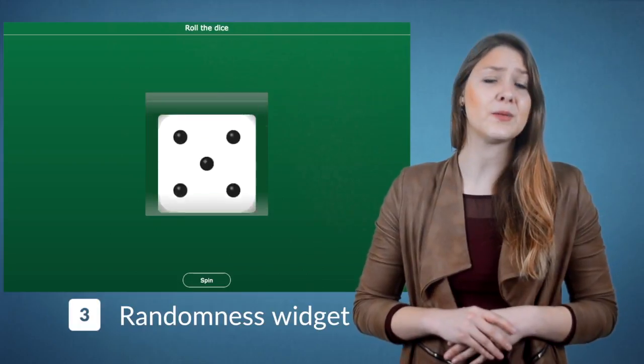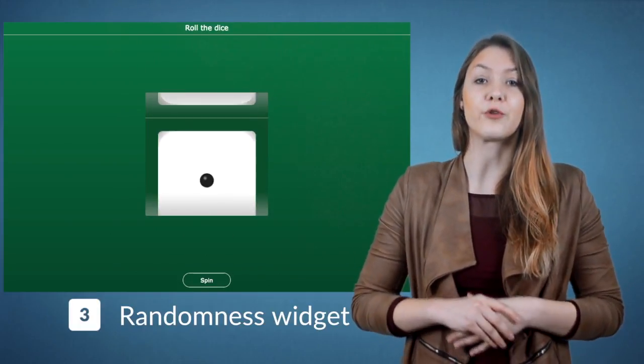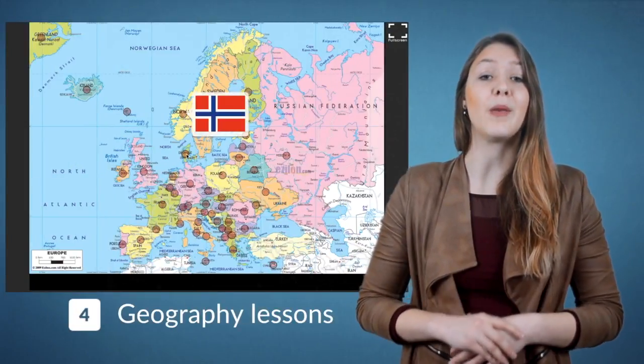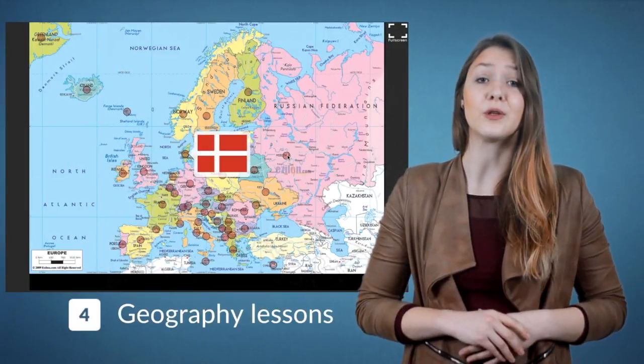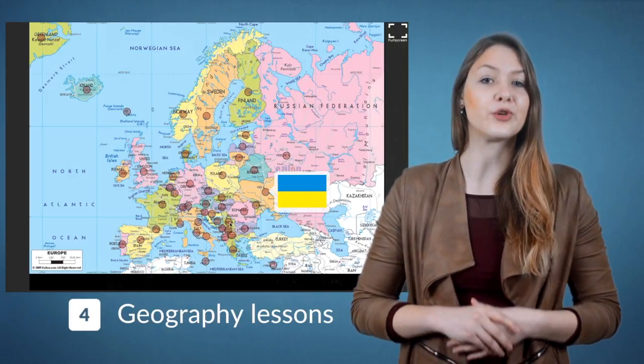So, what about hotspot images for your course? The following examples I'll show you are for specific courses. This example shows you a map of Europe. When you click on the hotspots, the flag of the country appears. A perfect example for geography lessons.